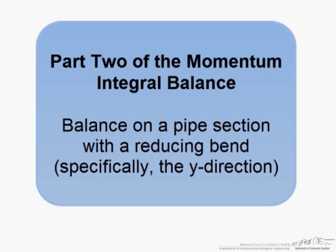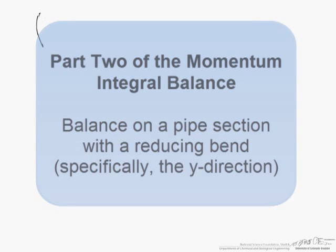This is part 2 of our momentum integral balance, and I'll draw the picture again. So we have a 30-degree reducing bend. It looks like this. We have V1 or V2 coming out here, and this is 30 degrees. One thing I do want to remind you: this is part of a pipe, so neither section one nor two are open to the atmosphere.